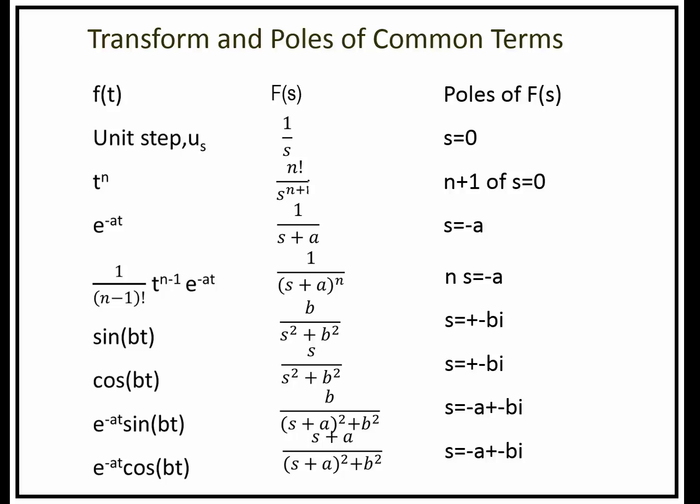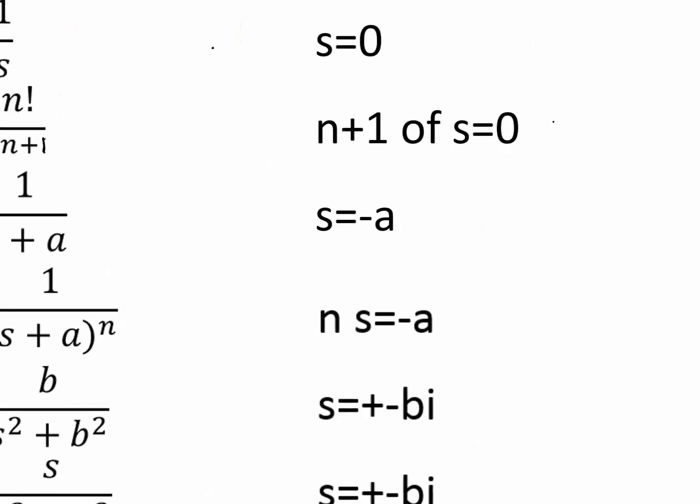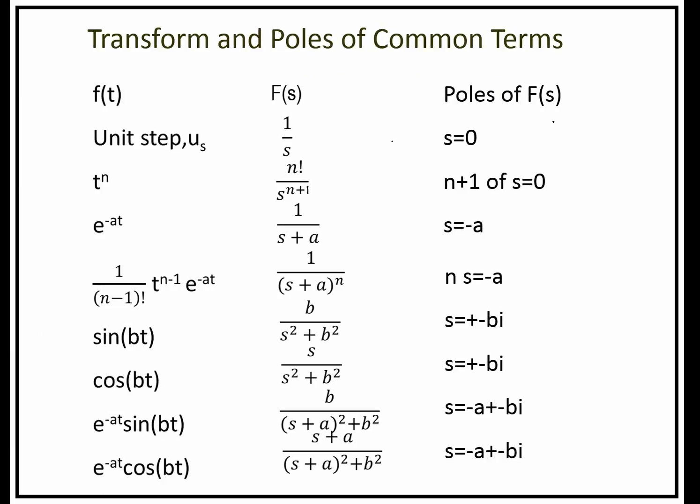For a unit step function, the transform is 1 over S. We have a single pole of S equal to 0. When you have a nominal to degree n, it corresponds to a fraction with S to the n plus 1 in the denominator and n plus 1 of poles at S equal to 0. The number of poles is 1 extra than the degree of the nominal.